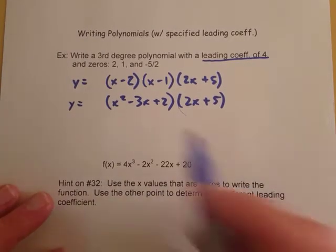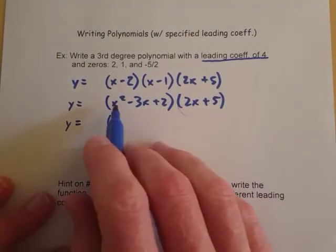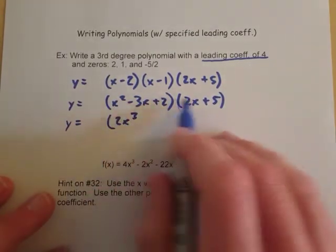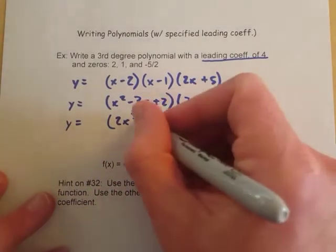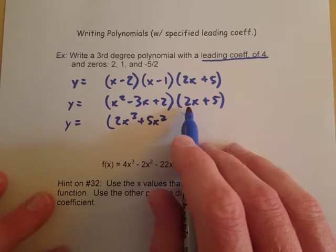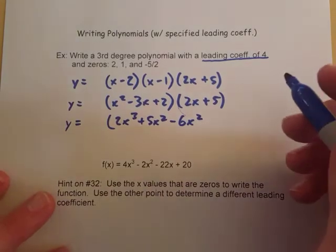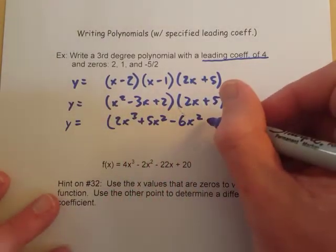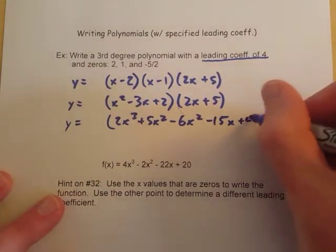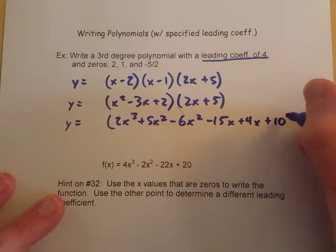Next we're going to foil all of this stuff and so that's a lot of foil to do. Let's see if we can take care of that, one piece at a time. x squared times 2x is 2x cubed, x squared times 5 is 5x squared. Next over to the negative 3x - negative 3x times 2x is minus 6x squared, and then negative 3x times 5 is minus 15x. Finally the 2 - 2 times 2x is 4x and 2 times 5 is 10.